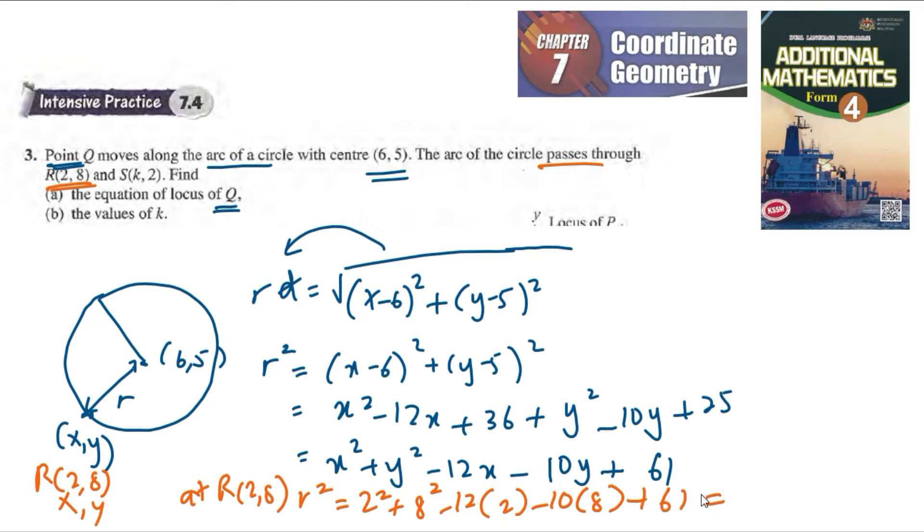We get 25. So R² is equal to 25, which means R is equal to plus or minus 5. But we know the radius, the distance should be positive, so R is equal to 5.